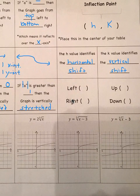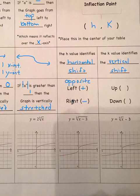Remember, the h value — x is a liar, it's opposite. So to move left, h is positive; to move right, h is negative. Always go opposite. Vertical shifting, however, stays the same since k is outside of the cube root — so up is positive and down is negative.